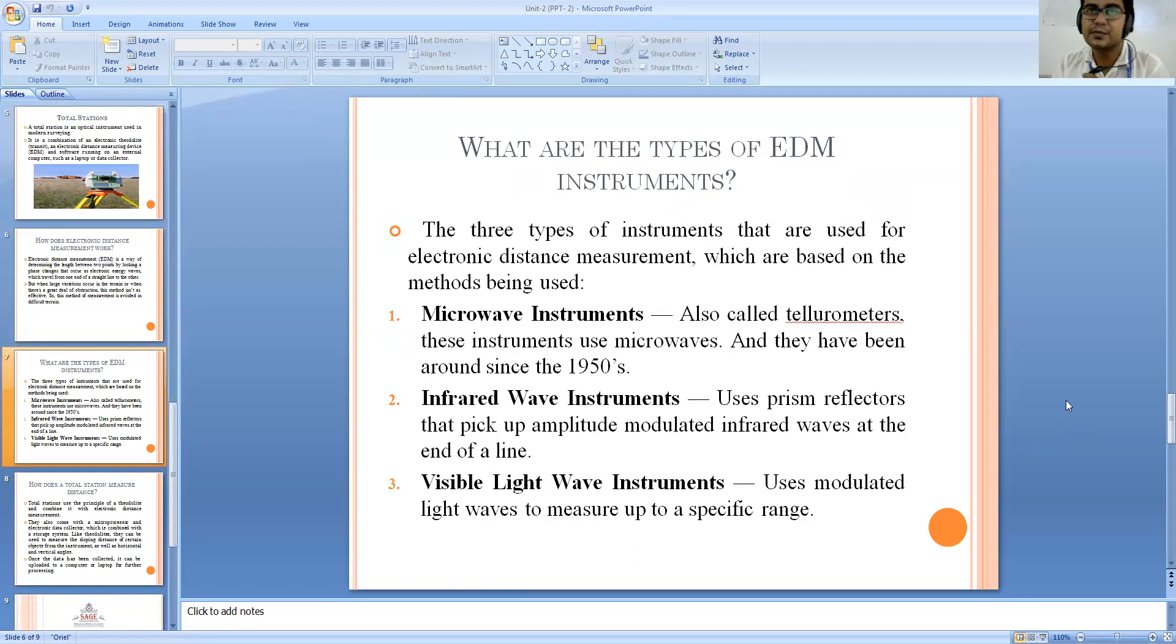What are the various types of EDM instruments? The answer is we have basically three basic types of instruments available with us. These are the microwave instruments, infrared wave instruments, and visible light wave instruments. If we talk about microwave instrument, it is also known as tellurometer and these instruments use microwaves. They have been used around 1950s. Other is the infrared wave instrument which uses a prism reflector which picks up the amplitude and then the readings are taken. Last is the visible light wave instrument which uses modulated light waves to measure up to a specific range.